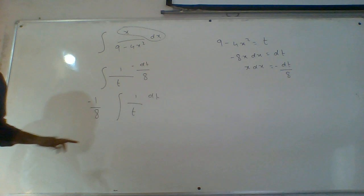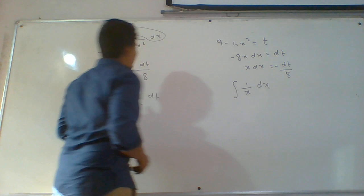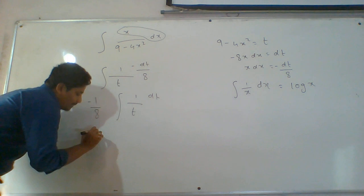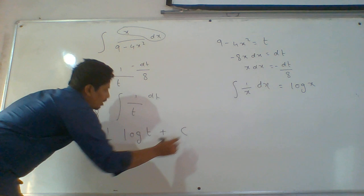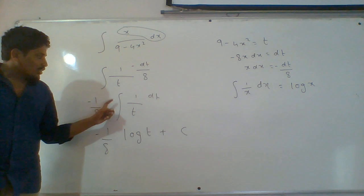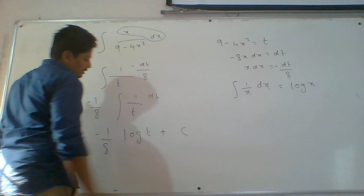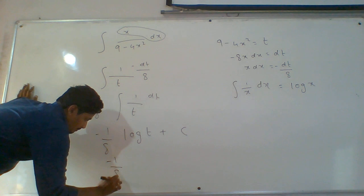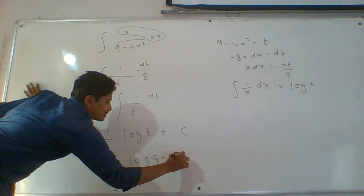The integral is now of the form 1 by t dt, which is of the form integral 1 by x dx. The formula for integral 1 by x dx is log x. So here for 1 by t it will be log t. After applying the integral and removing the symbol, c comes. The answer in terms of x: substitute 9 minus 4x square back in place of t.